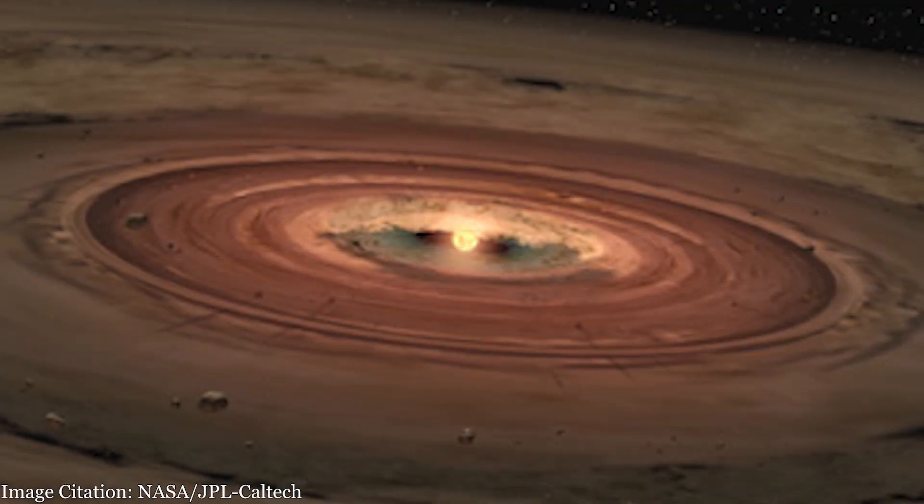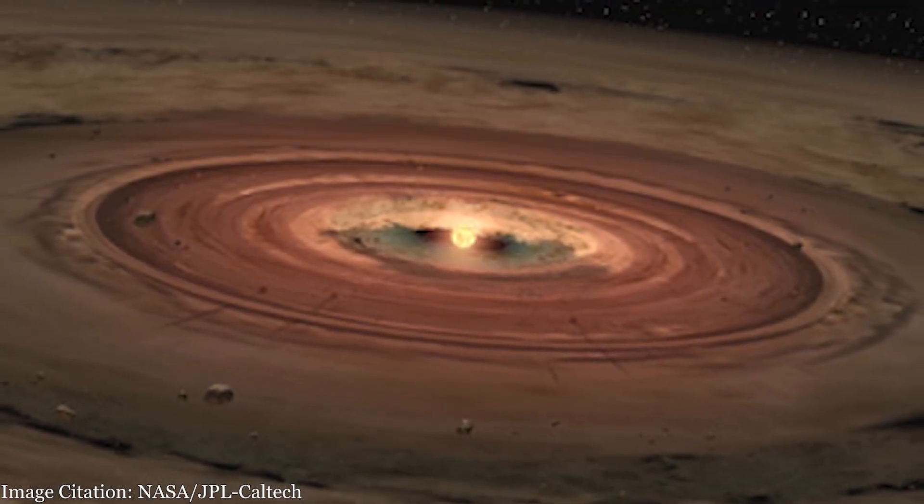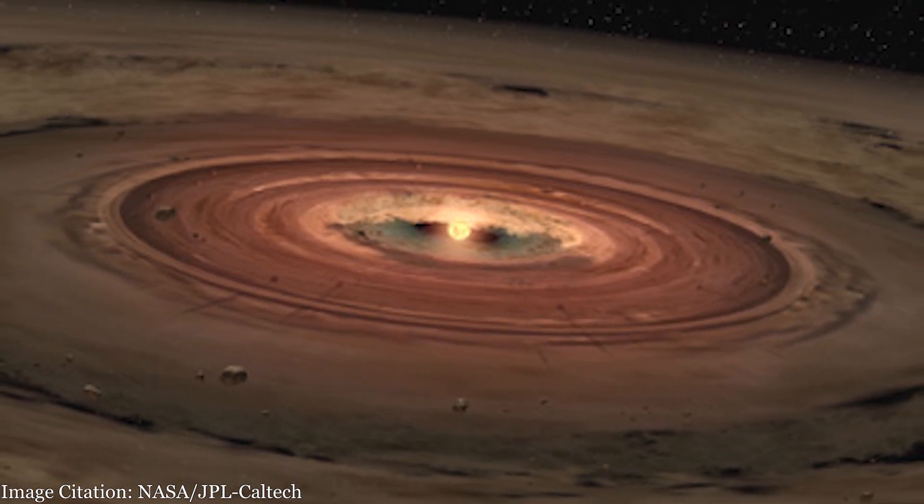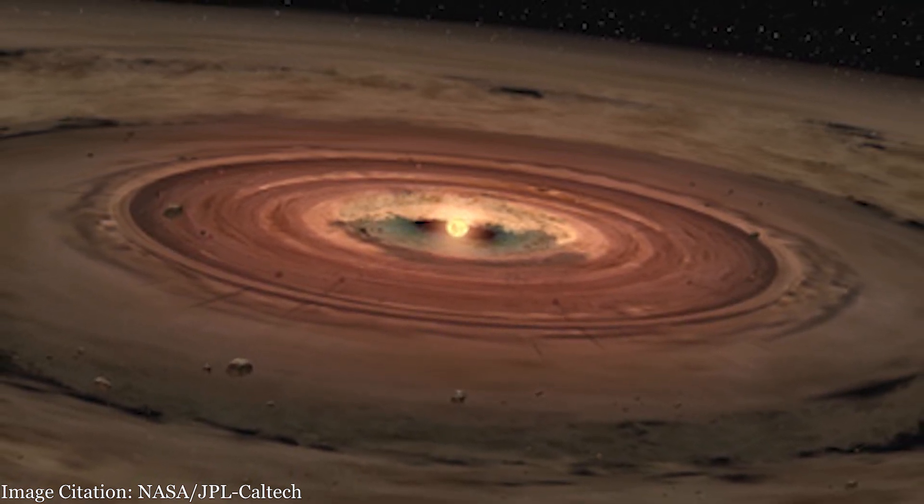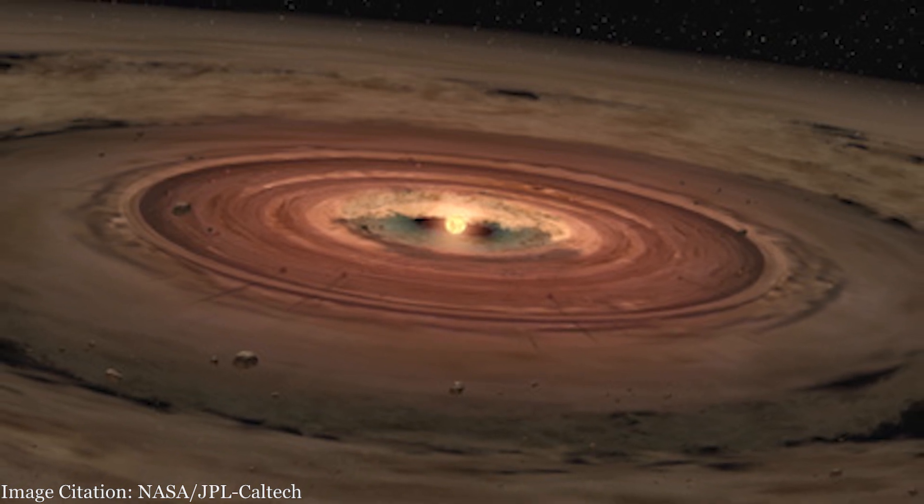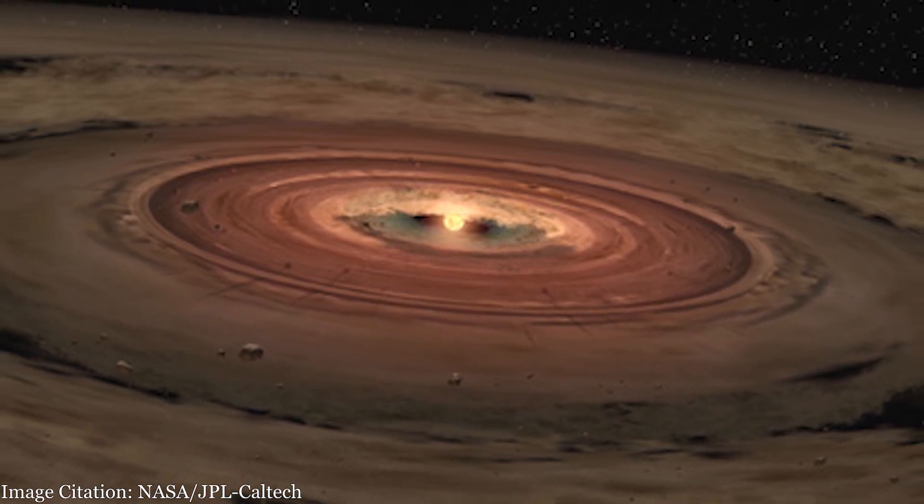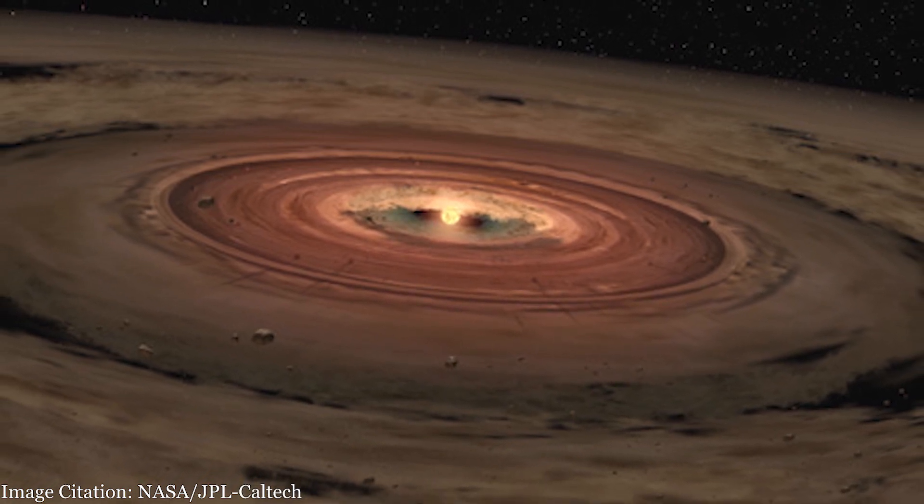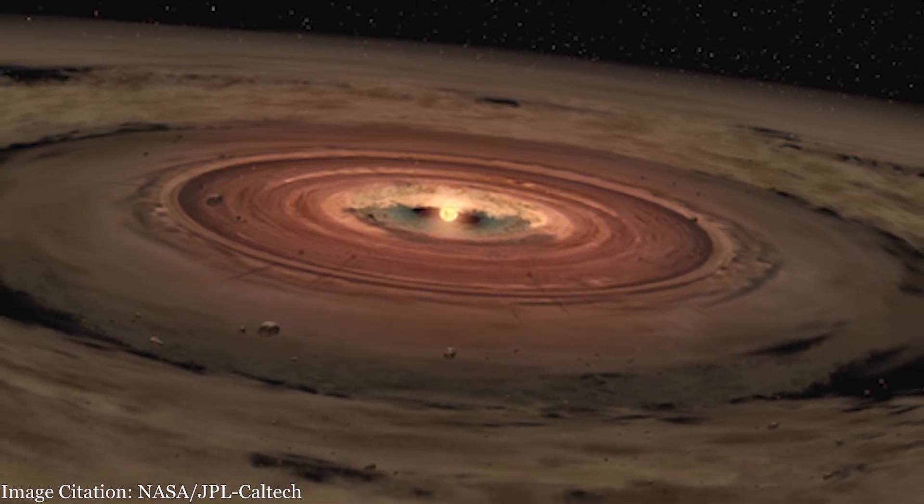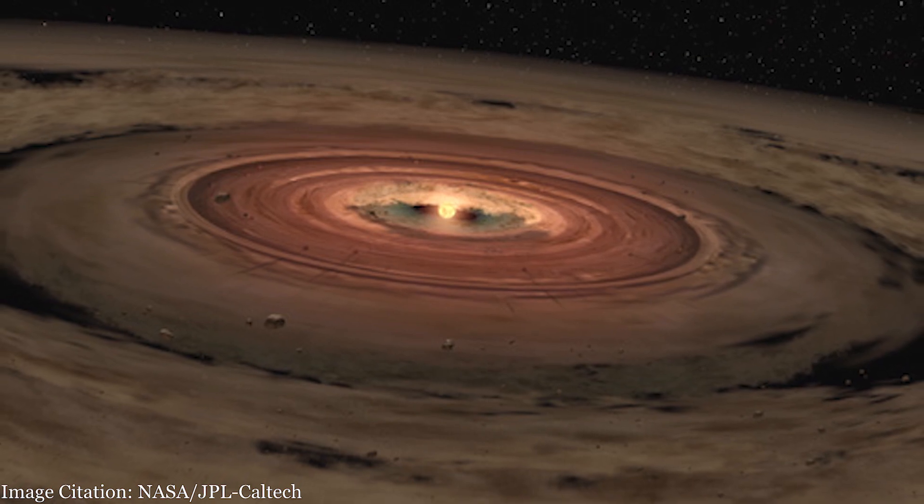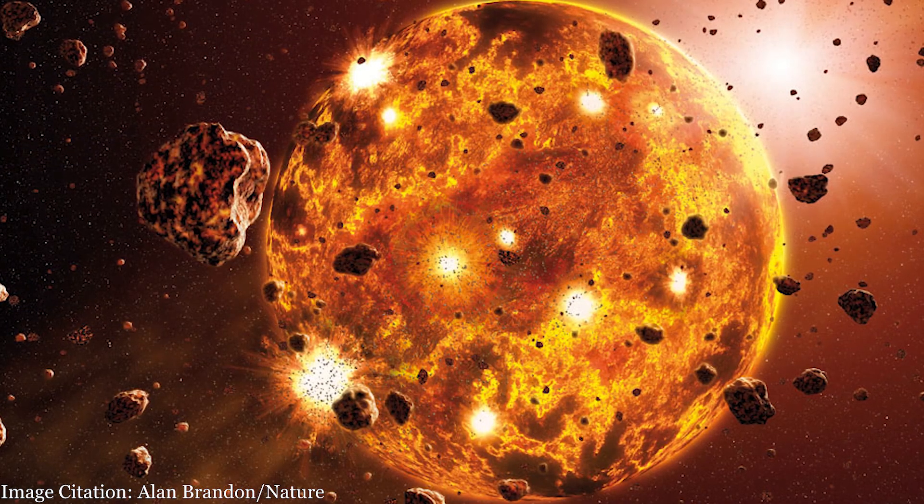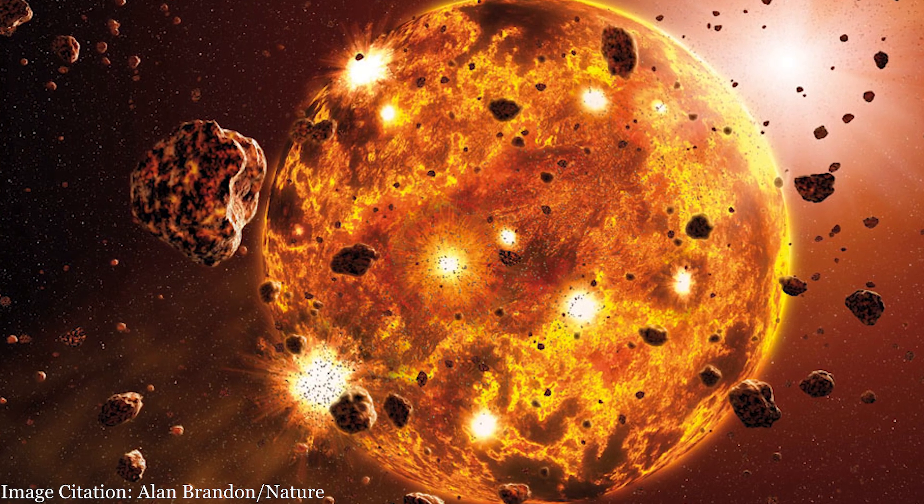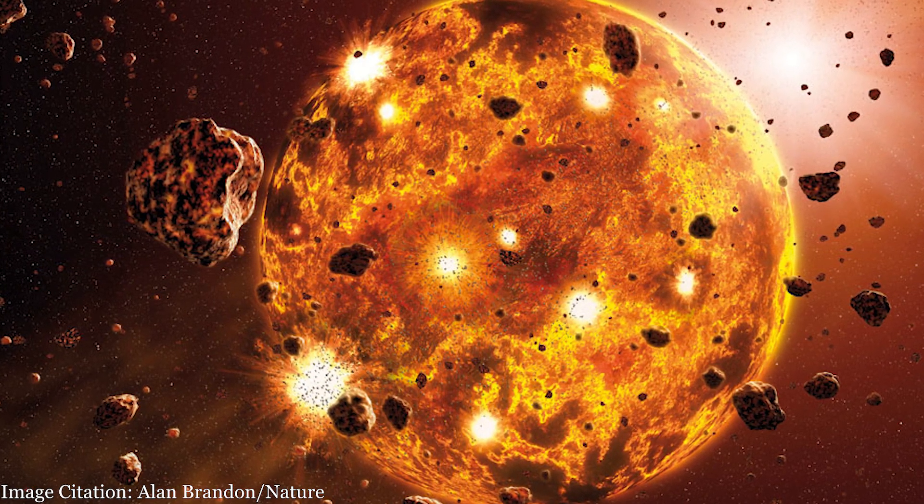Planets form as a natural byproduct of star formation. 4.6 billion years ago our solar system was a swirling disk of material surrounding the proto-sun which gave rise to planets. In this disk, gases condensed to form solids as temperatures fell. Then solid grains stuck together in a process known as accretion, gradually building up in size. This graphic illustrates the later stages of accretion, where larger chunks of material known as planetesimals are collecting to form a planet.